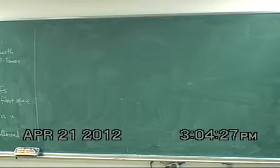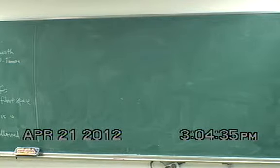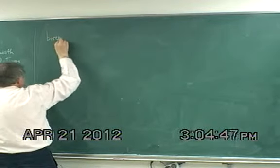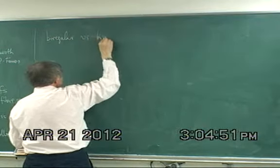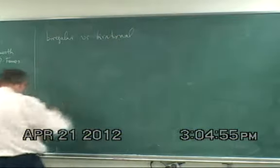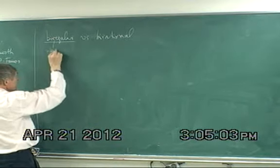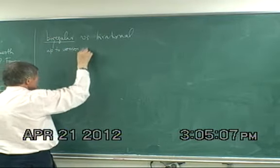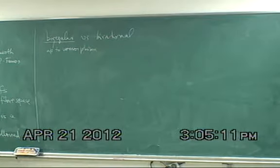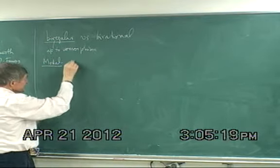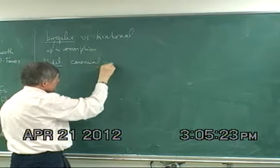I'm going to change the subject a little bit and try to explain why I'm making this grandiose distinction between what is biregular and what is birational. The word biregular means up to isomorphism, whereas birational means up to birational equivalence. The best model for birational equivalence is the canonical model of a variety of general type.